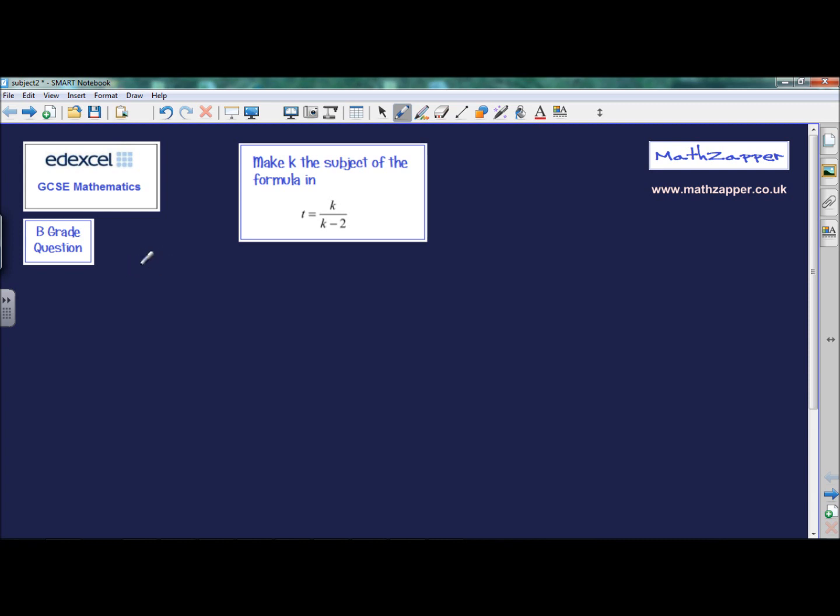So writing out the formula, t equals k all divided by k minus 2. If you wanted to put brackets around k minus 2, you could, and it makes it more easy to see what's actually happening.